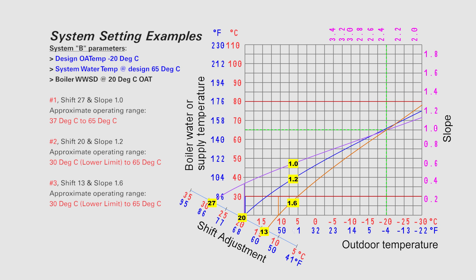System B parameters: the design outdoor air temperature is minus 20 degrees C, and the system water temperature at design is 65 degrees C. In example 1, shift is set at 27 and slope is set at 1.0, giving an approximate operating temperature range between 37 C and 65 C. In example 2, shift is set at 20 and slope is set at 1.2, giving an approximate operating range between 30 C and 65 C. In example 3, shift is set at 13 and slope is set at 1.6, giving an approximate operating temperature range between 30 C and 65 C.